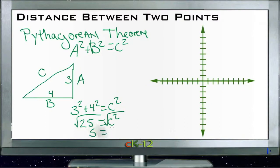Taking the square root of both sides, the square root of 25 is 5, and that equals c. So the Pythagorean theorem tells us how to find the diagonal of a right angle triangle.